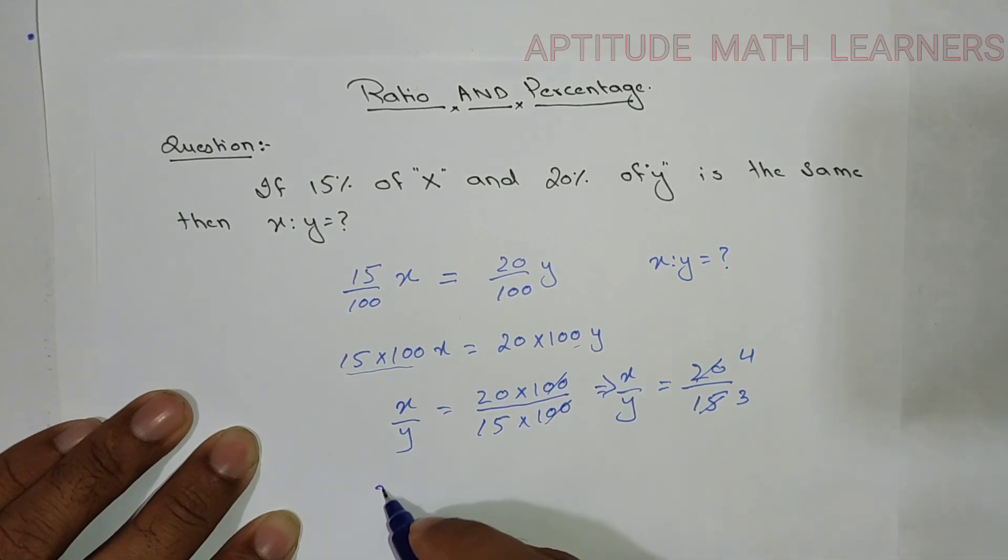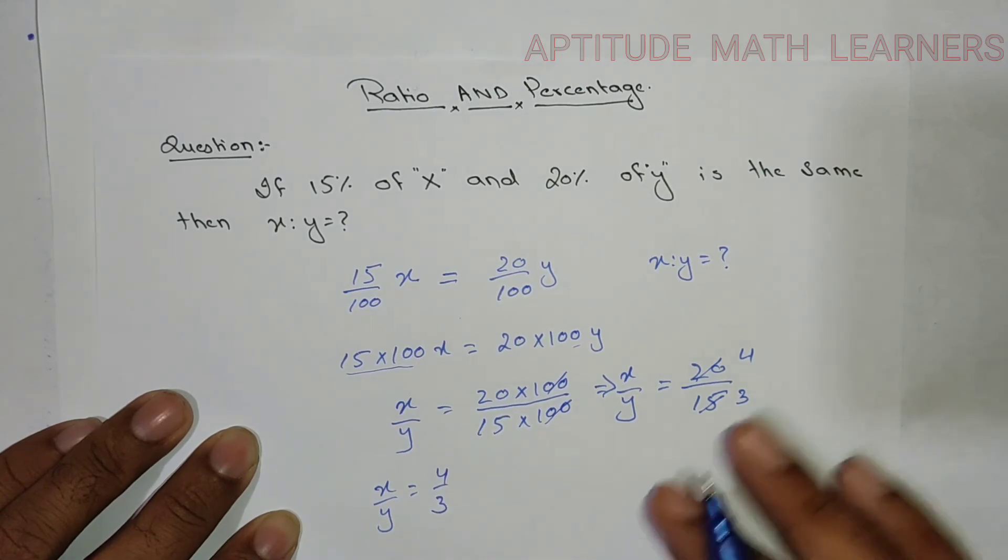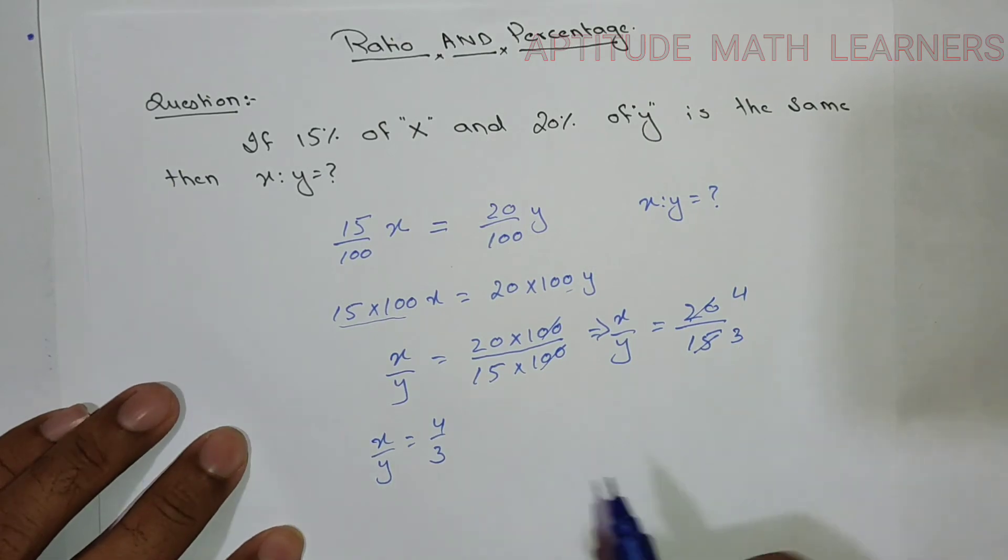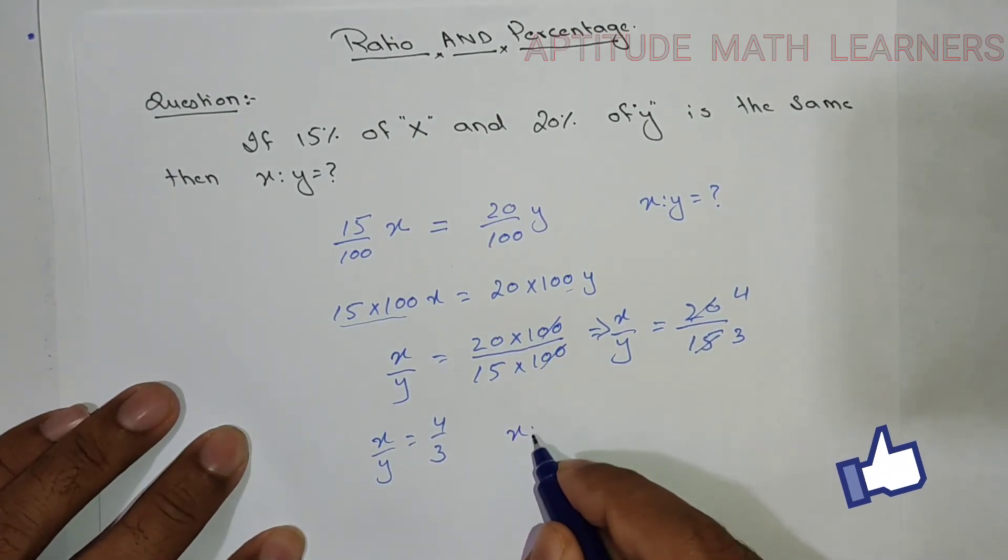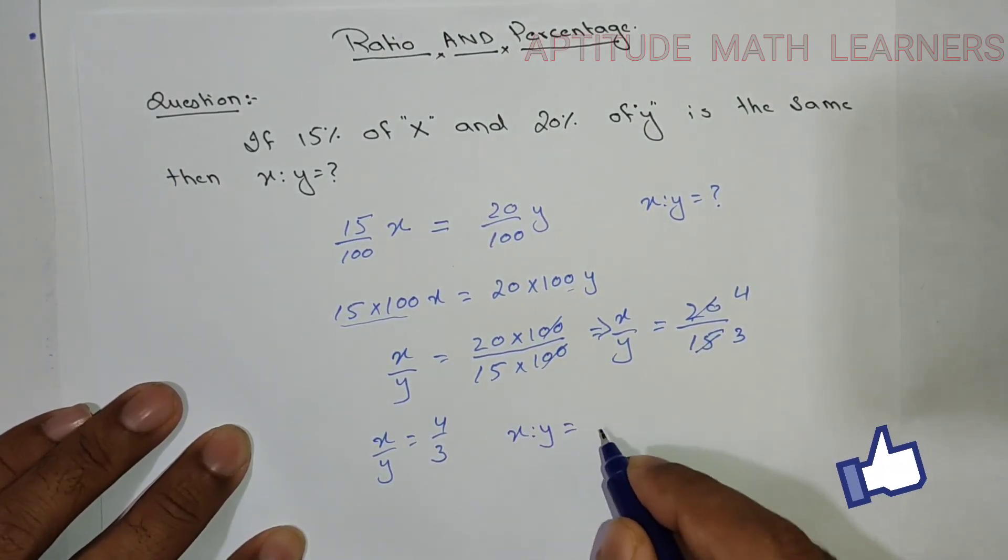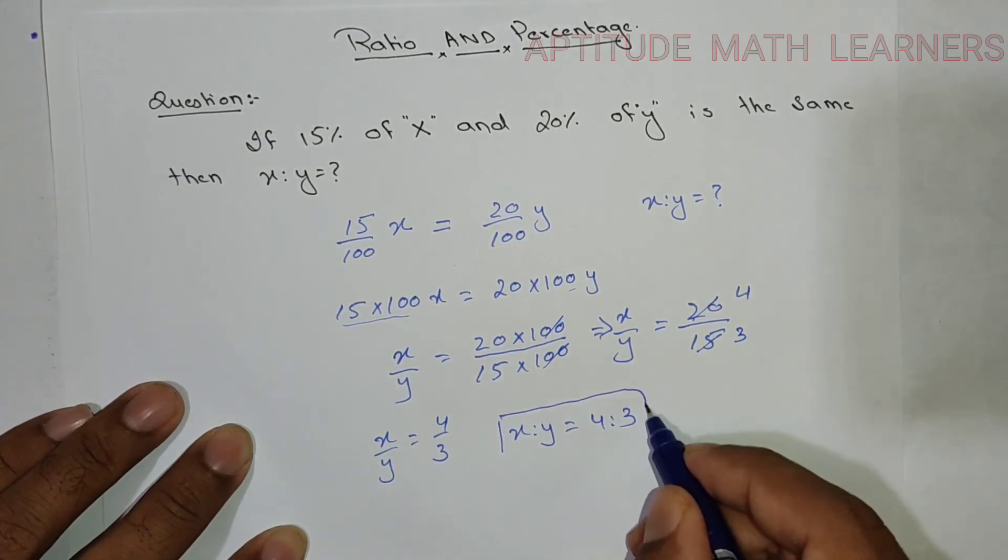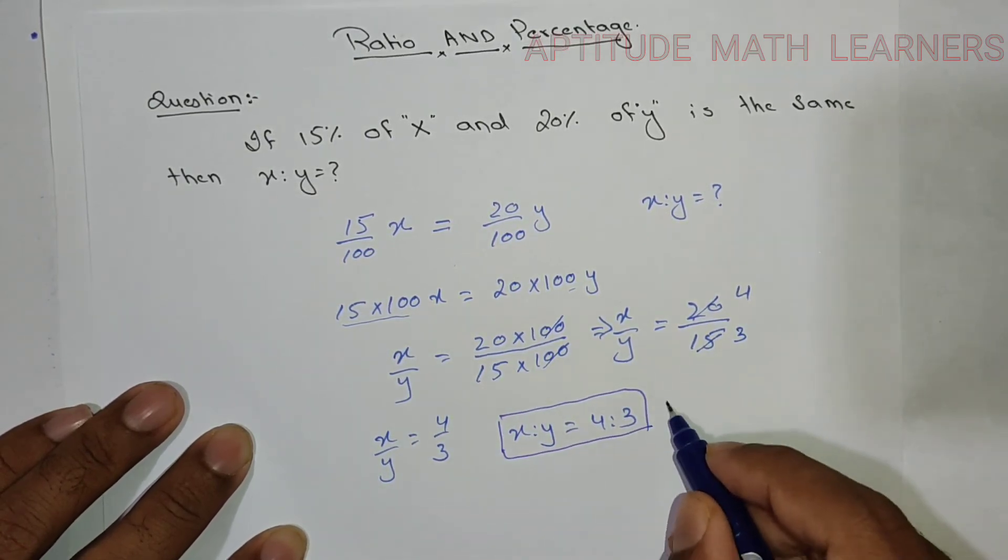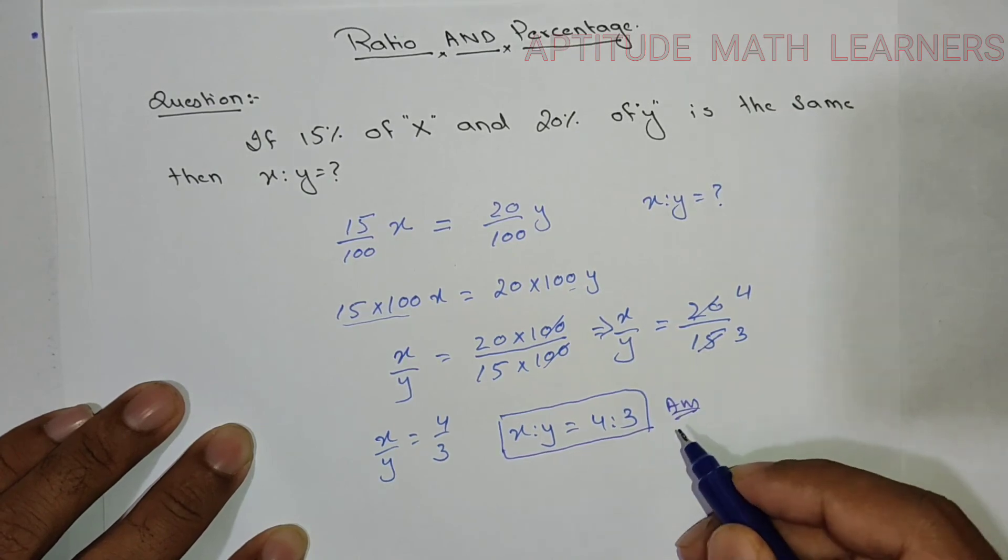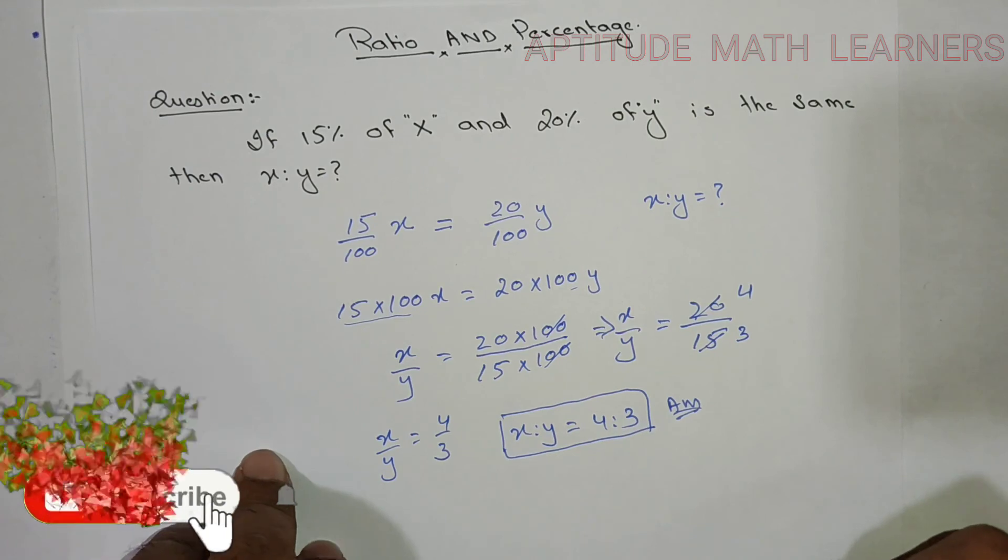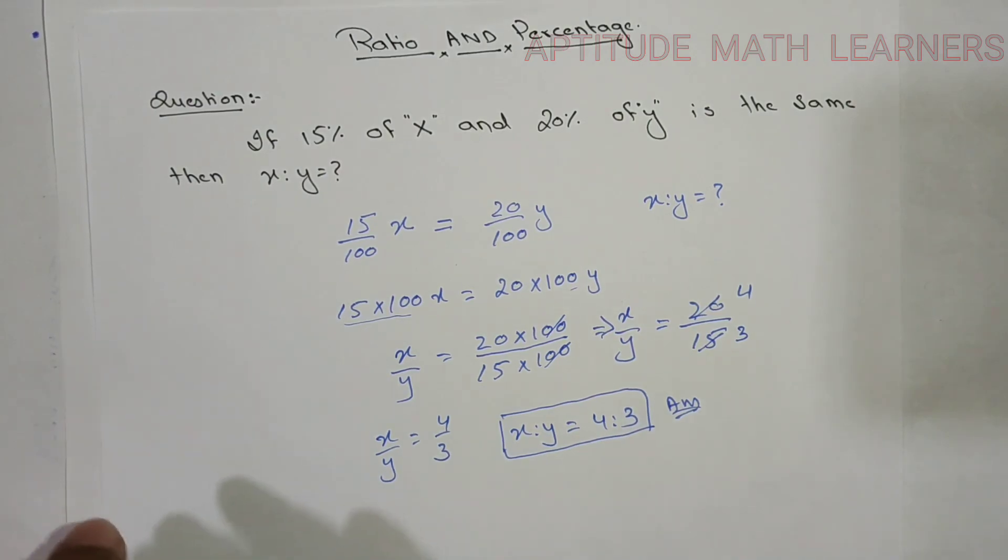So here x upon y is equal to 4 upon 3. We have got this, now just to bring it in the ratio form, we get x ratio y is equal to 4 ratio 3. So this is our answer. Hope you have understood the percentage and ratio of x and y. Thank you very much.